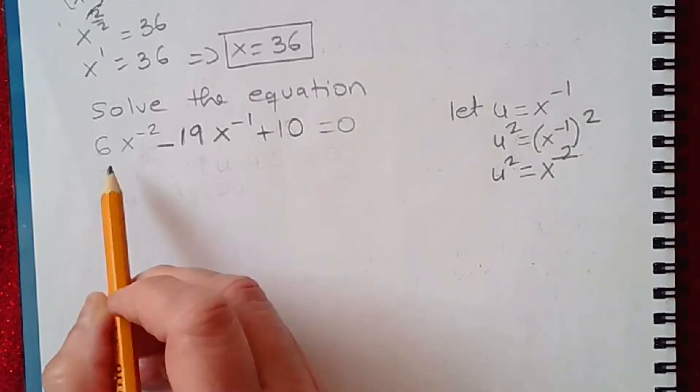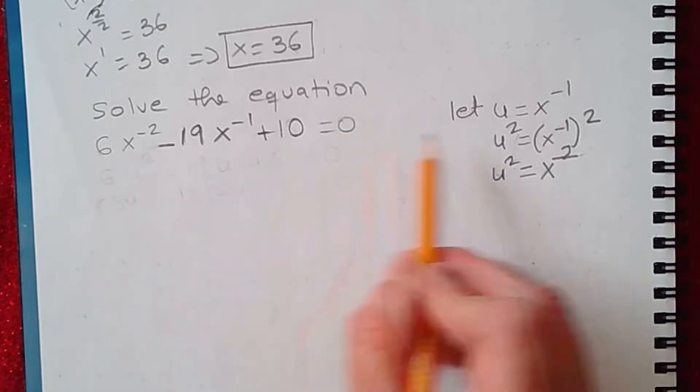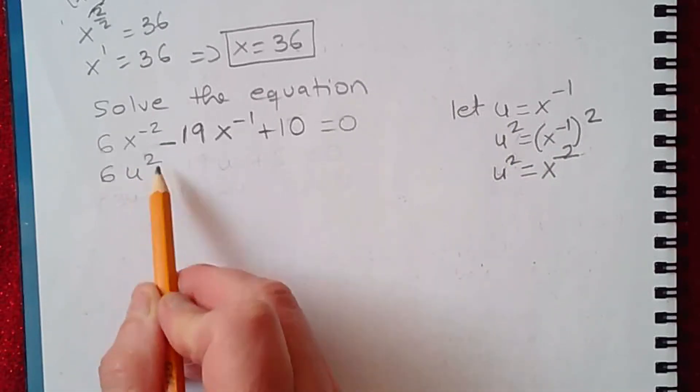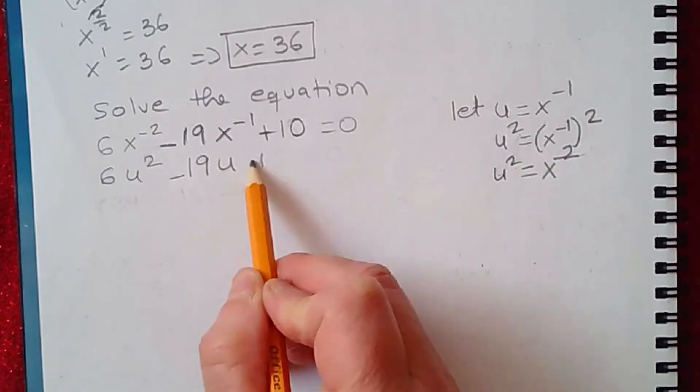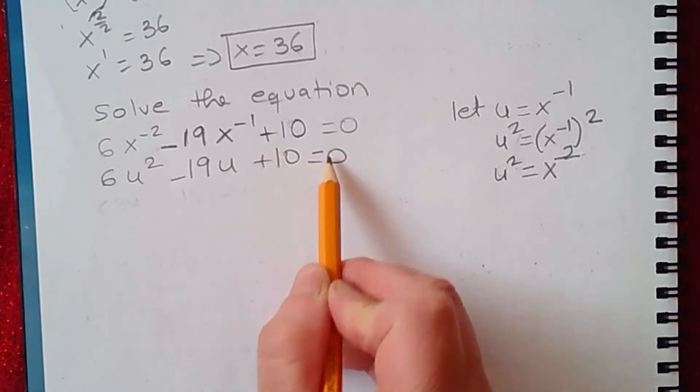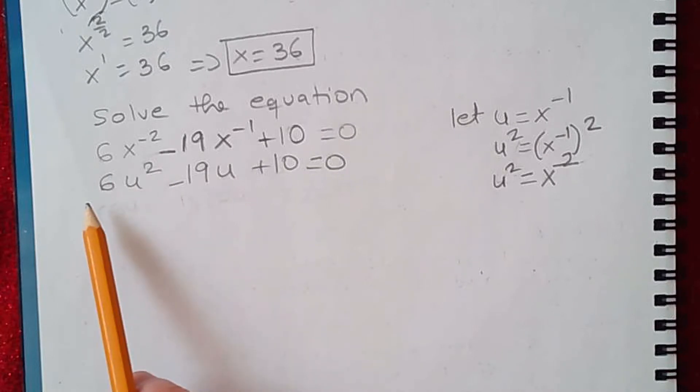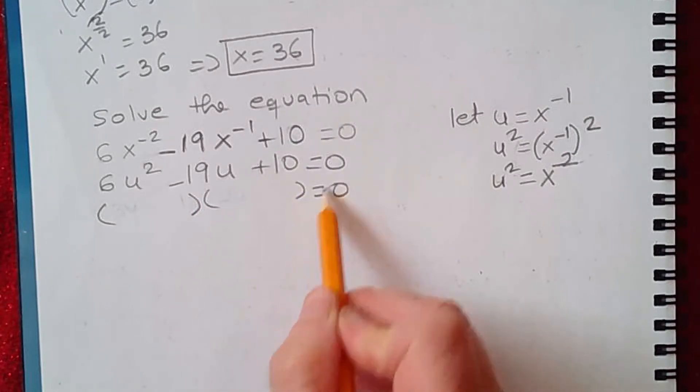So I can replace x to the negative 2 with u squared and x to the negative 1 with u. This becomes 6u squared minus 19u plus 10 equals 0. Now I changed this into a quadratic equation in terms of u, so I can solve in terms of u first. Let's see if we can try factoring this quadratic equation.